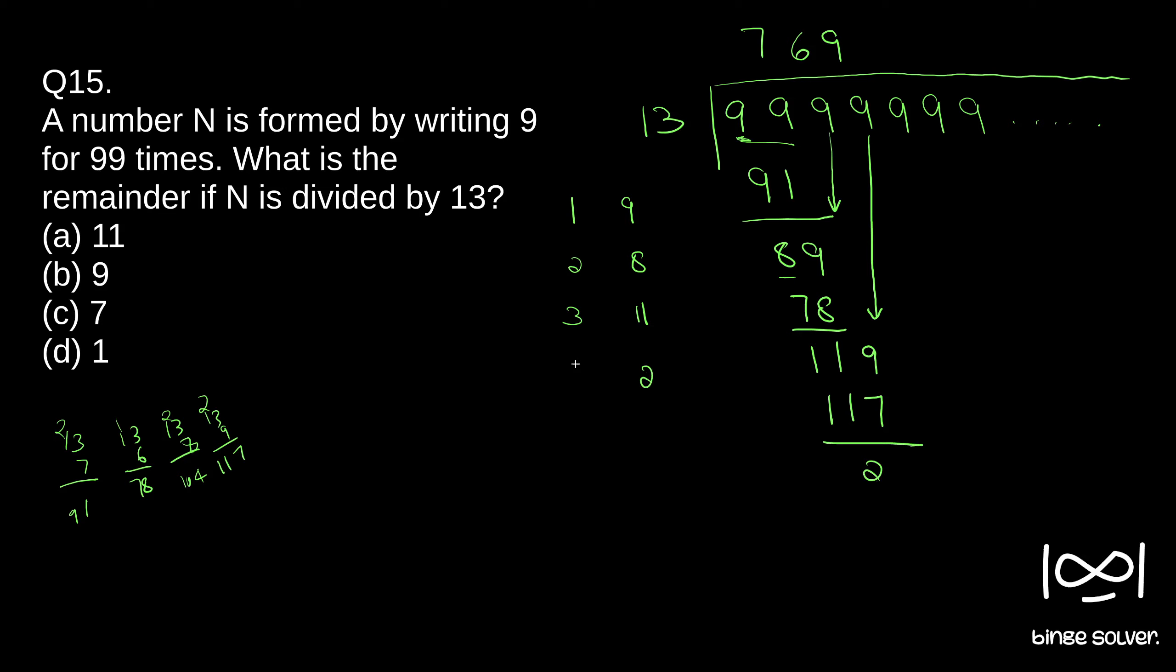We'll bring one more nine down, 29. 13 into two is 26. So two, 26. We have three. In case we had five nines, our remainder would become zero.